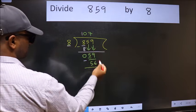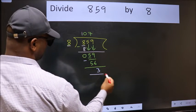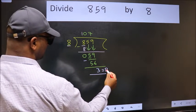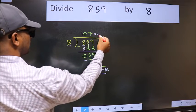No more numbers to bring down, so we stop here. This is our remainder, and this is our quotient.